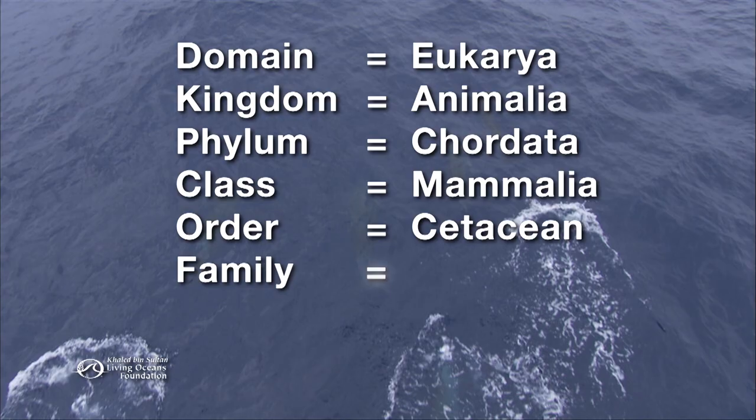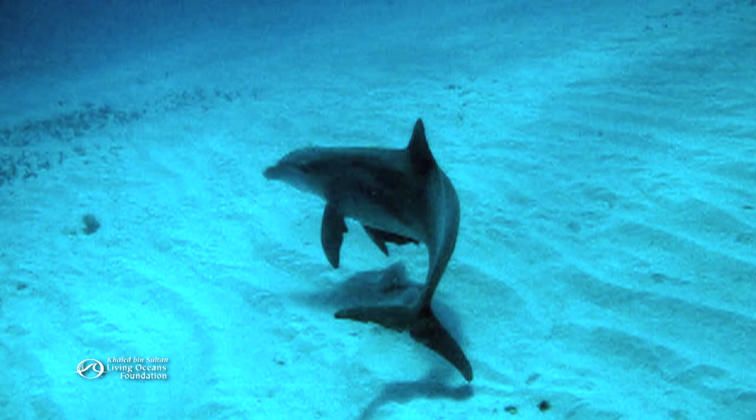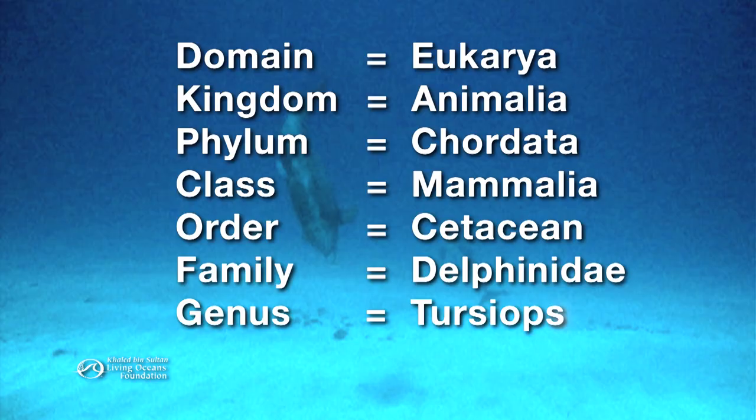Now for its family — it's delphinidae, or dolphins. But there are many kinds of dolphins. This one is in the genus called Tursiops. At this point, we've narrowed down this animal's classification from all the living things in the world to a genus that has just three species in it.